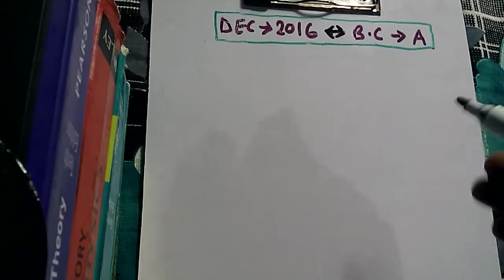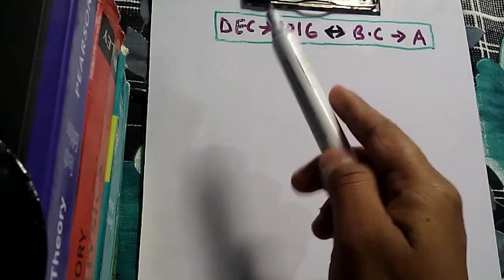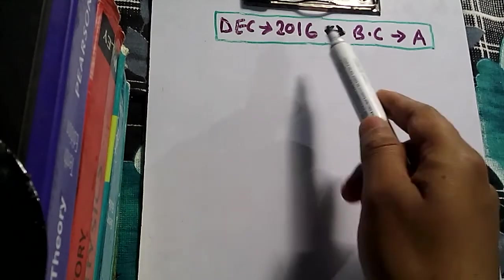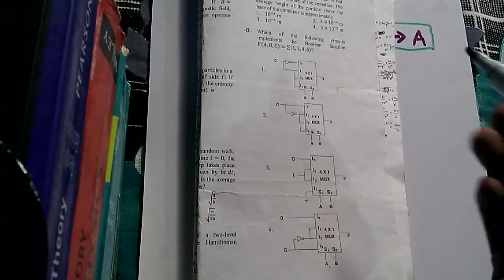Hello, this is Bejoy. Today I brought to you this problem from the December 2016 booklet, code A. It is based on the topic of digital electronics — specifically multiplexer and demultiplexer concepts.